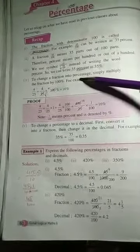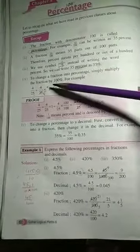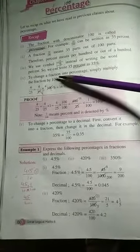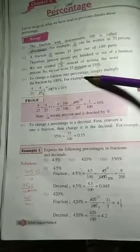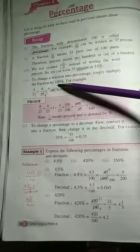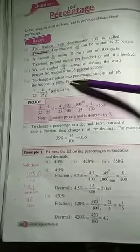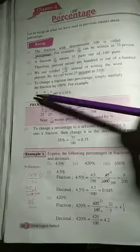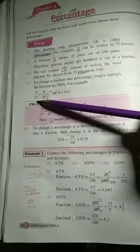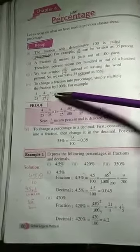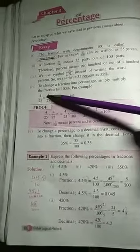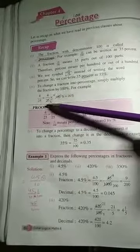Point 4: To change a fraction into percentage, simply multiply the fraction by 100%. For example, 4 by 25 is a fraction. To change it into percentage, we multiply it by 100%. 4 by 25 multiply 100%.